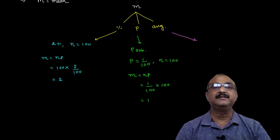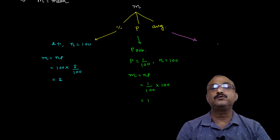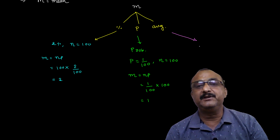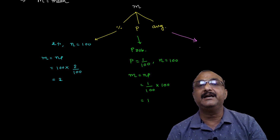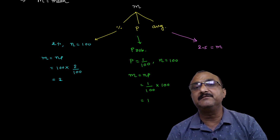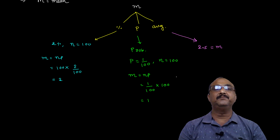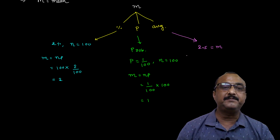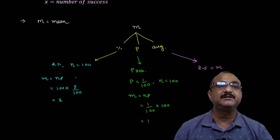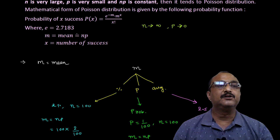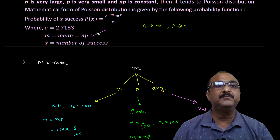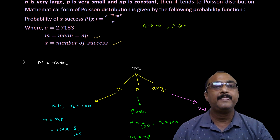When average is given, average means mean, and mean equals M. So in all three types of problems, M equals Np. X is the number of successes as given in the question, and e equals 2.7183.